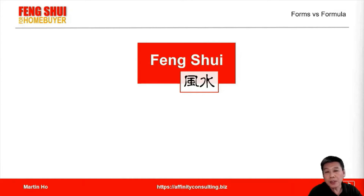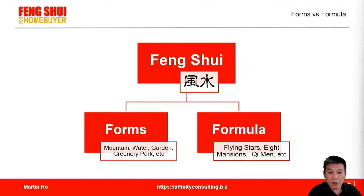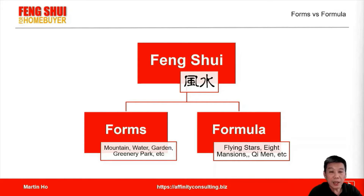Feng shui divides into two parts: forms and formula. Forms is about the environment — the mountain, the water, the garden, the greenery, the park. On the other hand, feng shui principles and techniques are used to create the quality of the interior of the home using formulas.